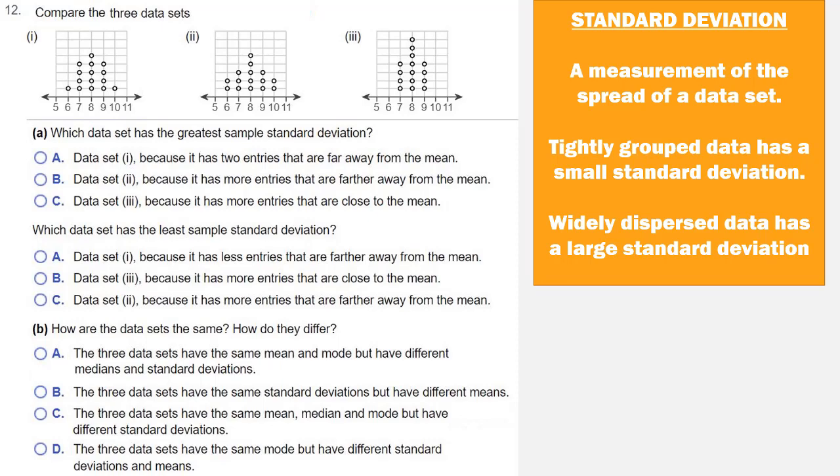So the correct choice for part A, which data set has the greatest sample standard deviation, is going to be graph 2. So data set 2, because it has more entries that are farther away from the mean. Which one has the least? Well, we already said that was graph 3, which is choice B.